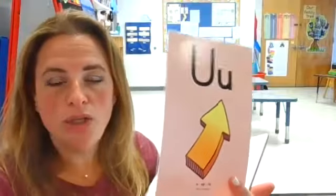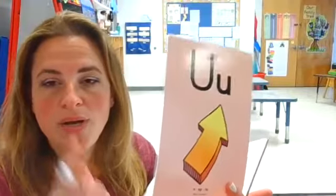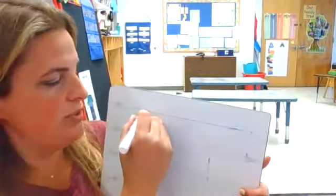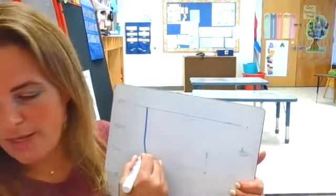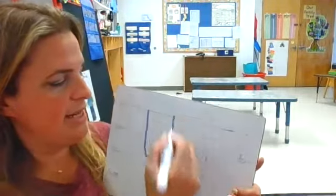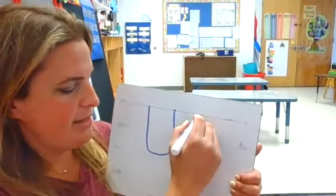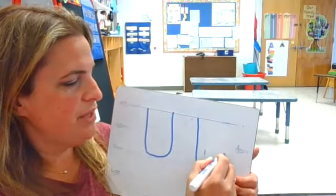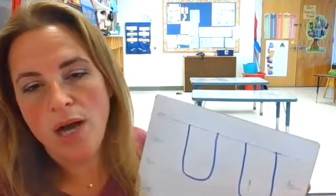Last one for this week is U. You, up, uh. You're going to start at the skyline. Go down to the grass line. Then curve it up to the skyline and stop. Skyline down to the grass line, curve and up to the skyline. You, up, uh.